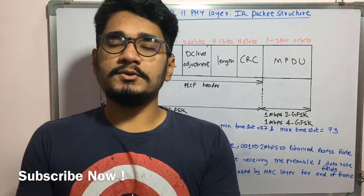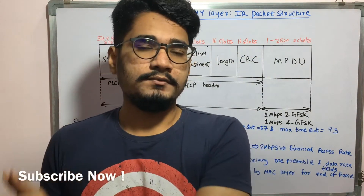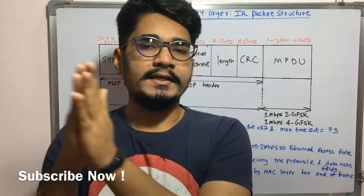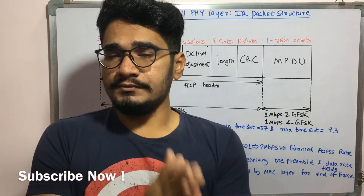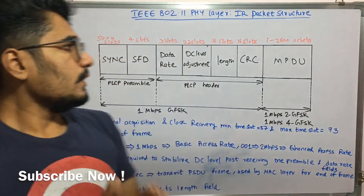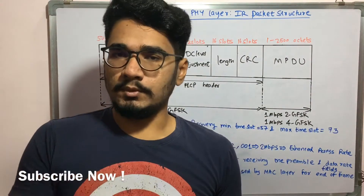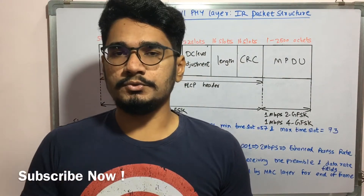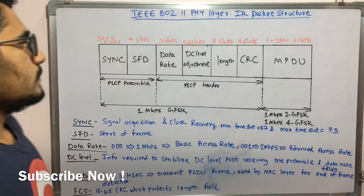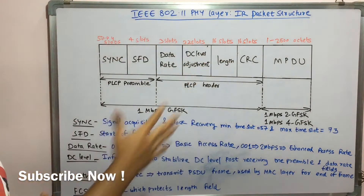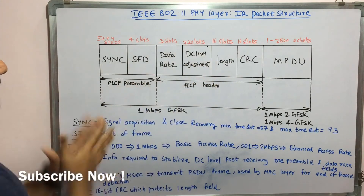Hey guys, welcome back to my channel. So today in this video we'll see the IEEE 802.11 physical layer, and in that we'll see the IR packet structure — that is the infrared rays packet structure. This packet structure is mainly involved in the WLAN architecture where we use it to transmit as well as to receive the signals. Let's see the packet structure and how it looks basically.